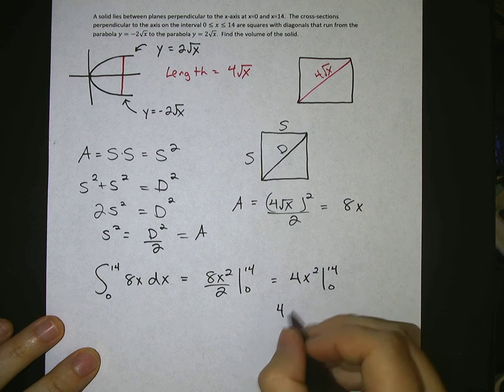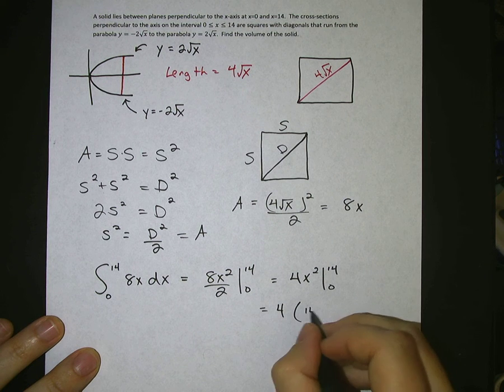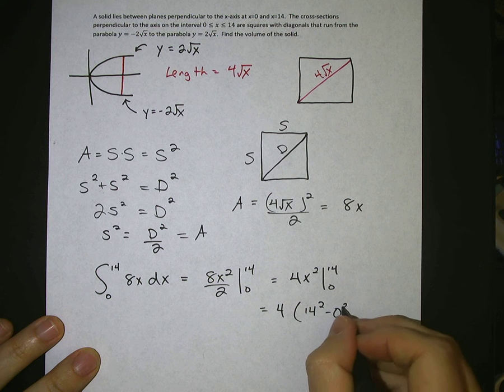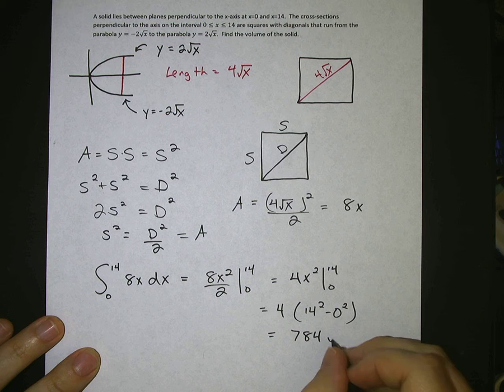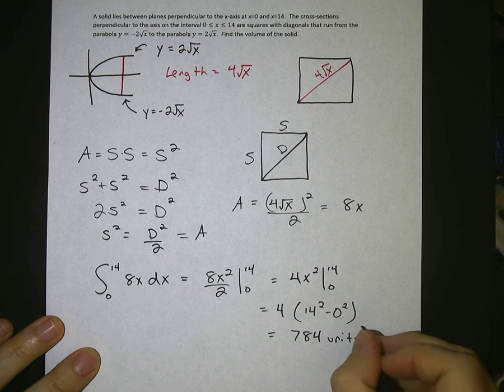Plug in your limits, factor out the 4, 14 squared minus 0 squared, and that will give you 784 units. And this is volume, so it's units cubed.